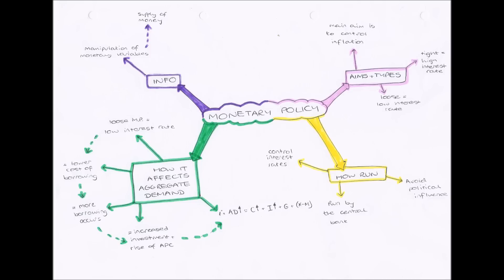Now let's look at the scenario of tight monetary policy — a high interest rate. If the interest rate is 4%, you need to pay 4% interest every month, which is quite a lot. Because there's a higher cost of borrowing, fewer people will borrow, meaning fewer households and businesses have money to spend on goods or to invest. Therefore consumption and investment will fall, and aggregate demand will fall.